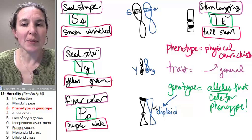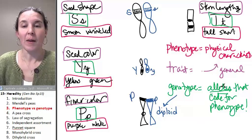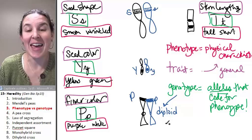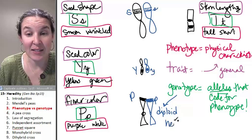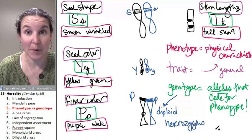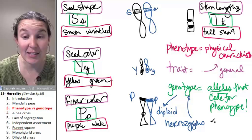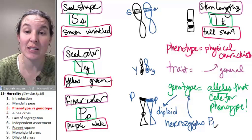Now, genotypes can have two forms. We can have a heterozygous genotype, so a genotype can be heterozygous if there are two different alleles.